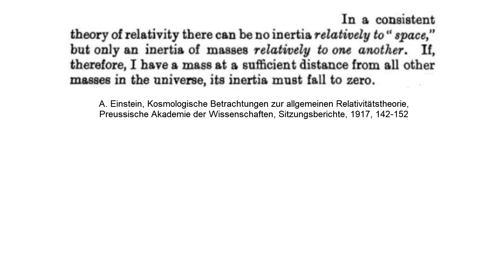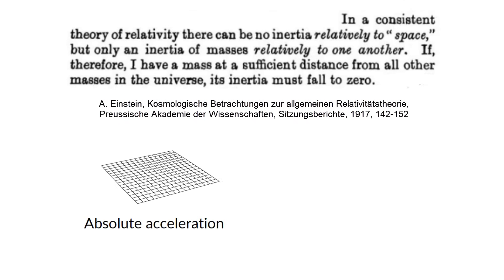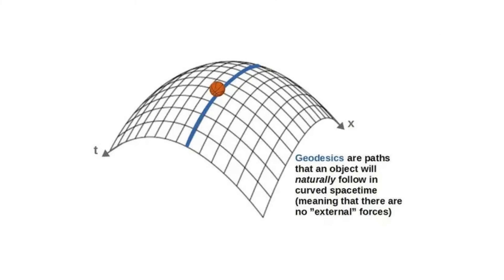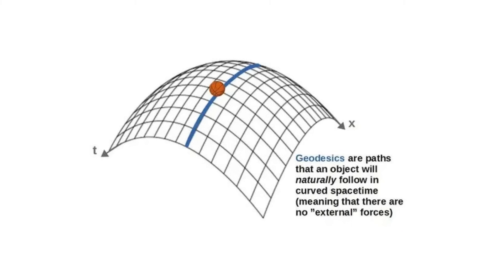Einstein attempted to build his general theory of relativity without absolute acceleration, acceleration with respect to spacetime, through the use of tensors and replace it with the Machian notion of relative acceleration, acceleration with respect to other bodies. But he was unsuccessful in doing so. And general relativity features an absolute notion of acceleration similar to that of Newton's.